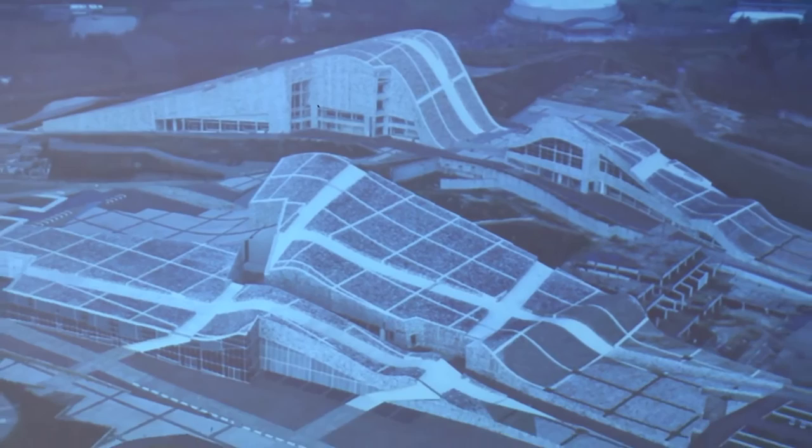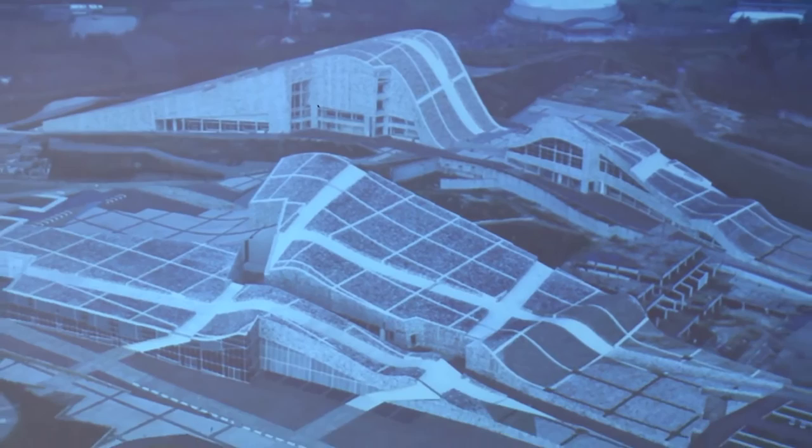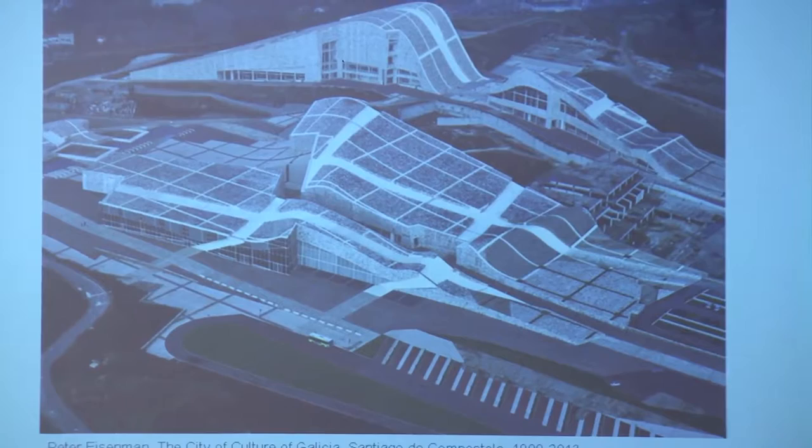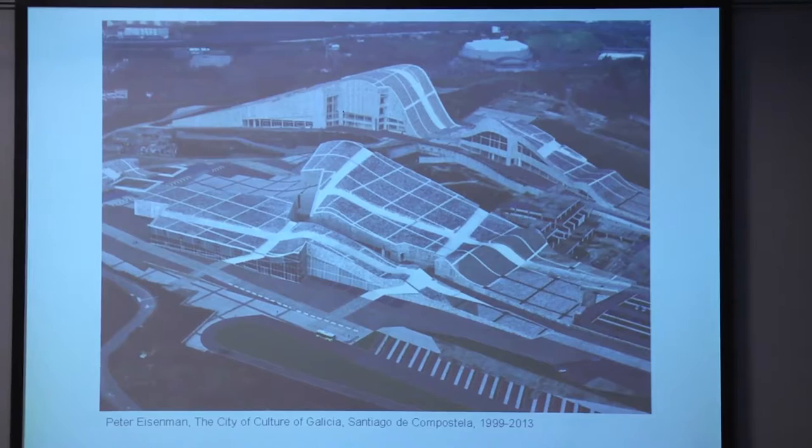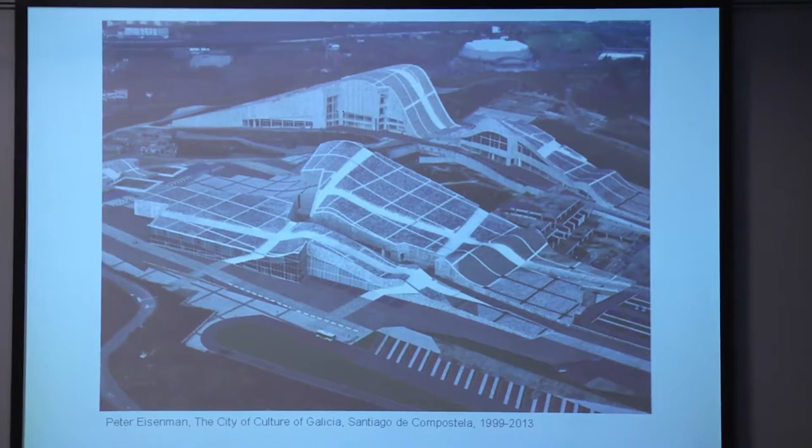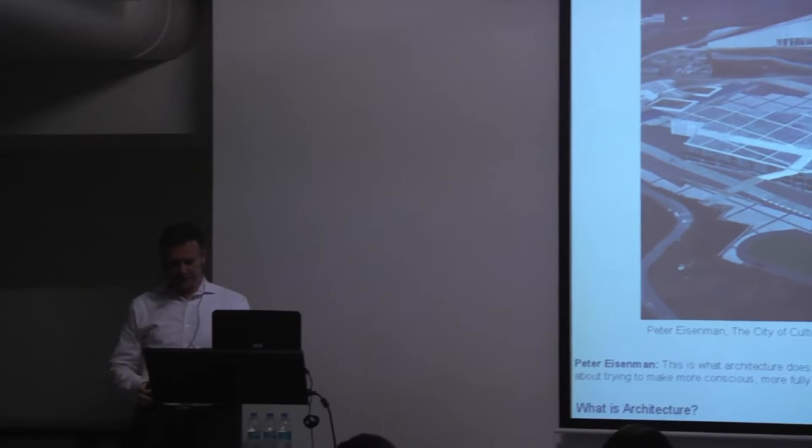The book that was mentioned — Conversations with Peter Eisenman: The Evolution of Architectural Style — just came out and it's going to be available very soon. These conversations were taking place in 2003, 2009, and 2016 — three different conversations about seven or eight years apart.